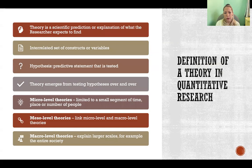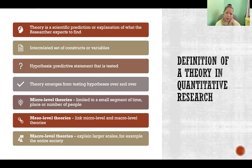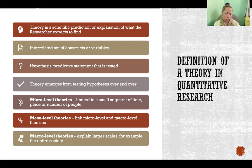Theory is a scientific prediction or explanation of what the researcher expects to find. Theories are developed in different ways. They could be developed through qualitative research, which is more exploratory — you explore the topic, develop a theory, and then test hypotheses based on that theory quantitatively. Theory can also emerge from quantitative research, where similar studies done over time reveal certain relationships that develop into a theory.